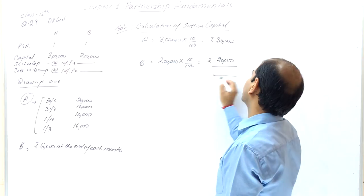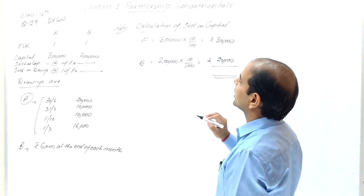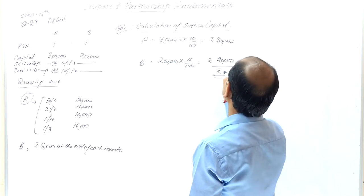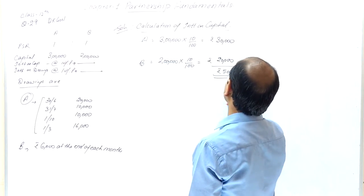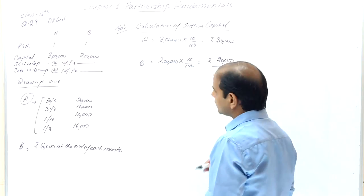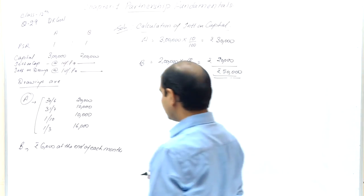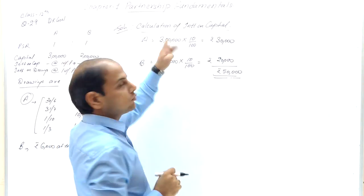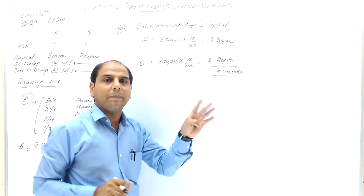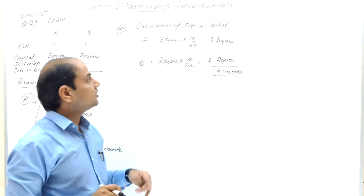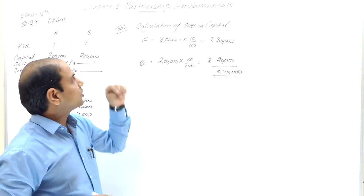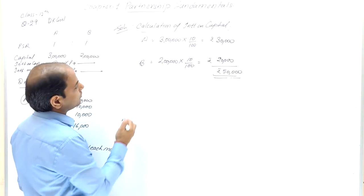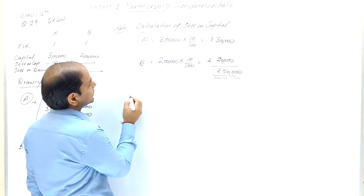So total interest on capital for A and B combined comes to ₹50,000. We were asked for two things: interest on capital, which we have now calculated, and interest on drawings. Now we move to the second part.